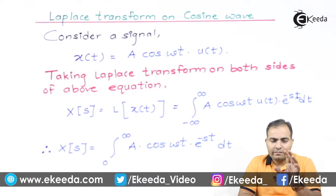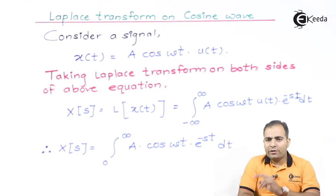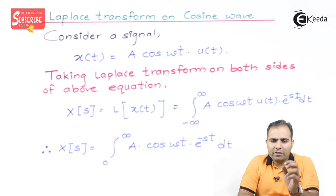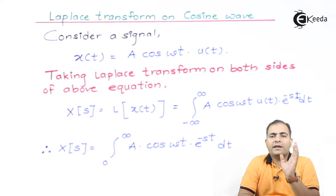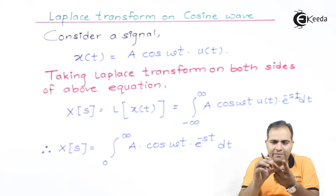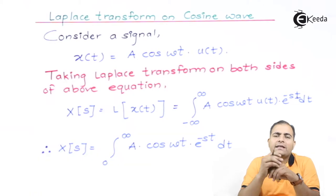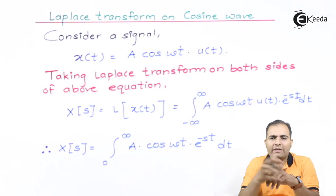First of all, let's assume this function is causal. Causal means the function is written in a causal term. Simply multiply it by the unit step function, or just mention the time period for t greater than or equal to 0. This function is available only for t greater than or equal to 0. You have two choices: multiply by unit step, or mention the time period t greater than or equal to 0.